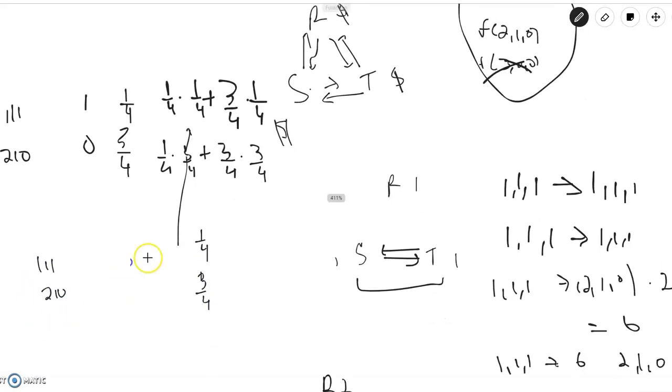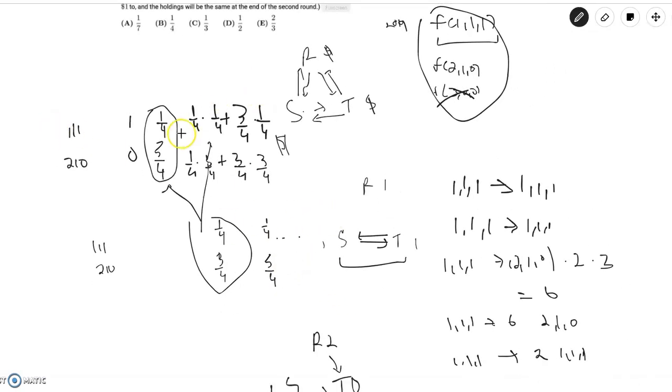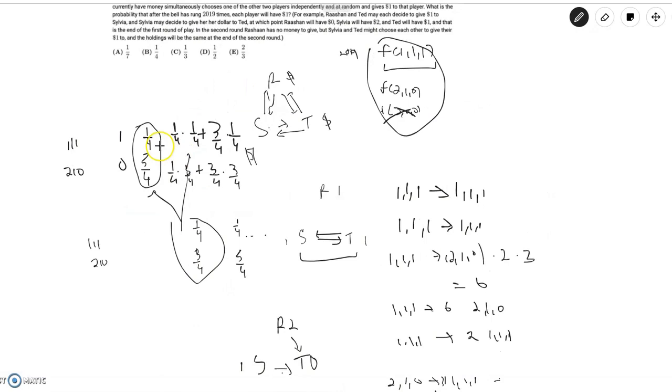So what do we see here? We see that these values are the exact same as these values. And if you get the same values after one turn, that means after the next turn, you'll also have one fourth, and three fourths, and so on. So that means no matter how many turns you do it, as long as the number of turns is greater than one, the probability that you will have all three players ending with one dollar each is always going to be this value, which is just one fourth.